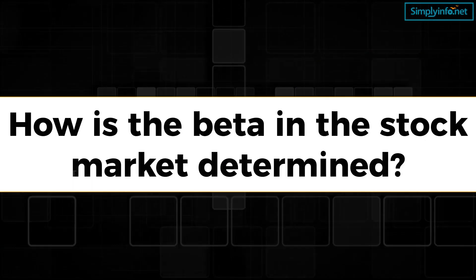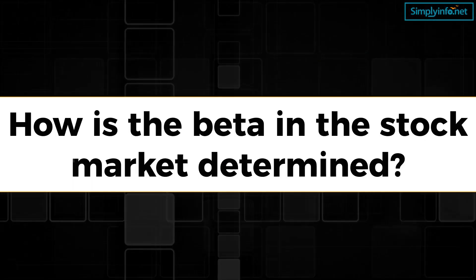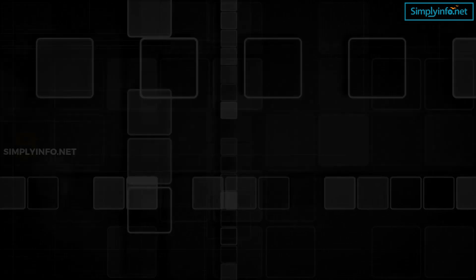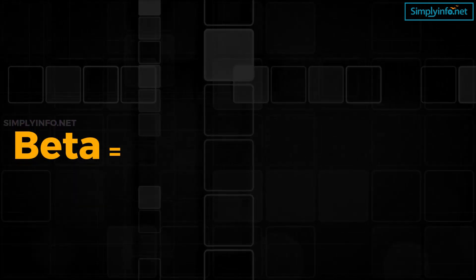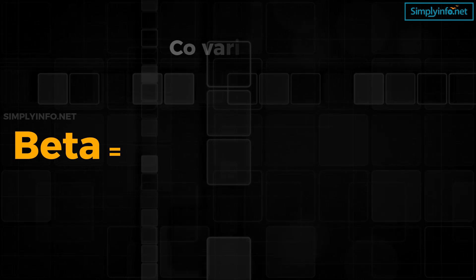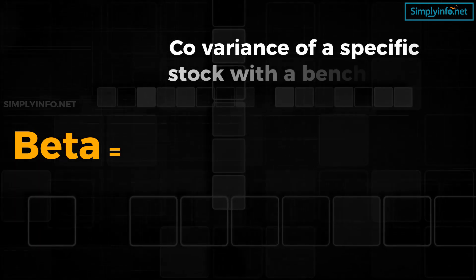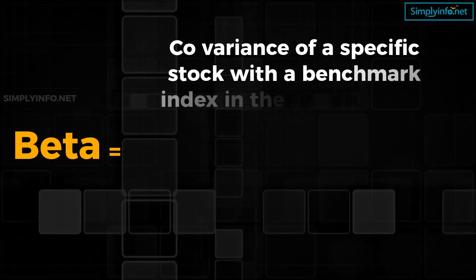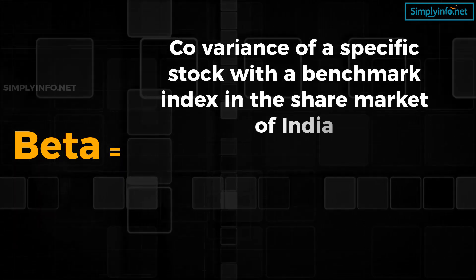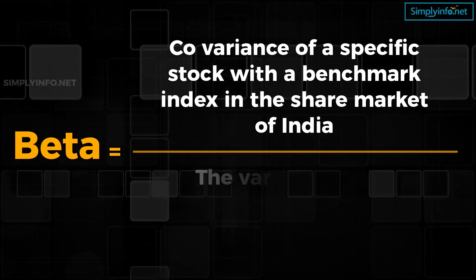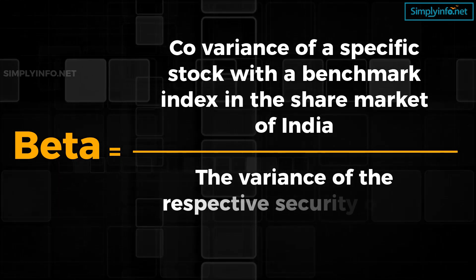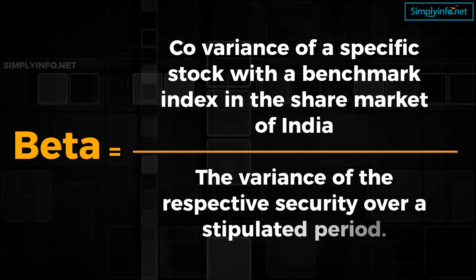How is the beta in the stock market determined? The formula of beta is calculated as follows: beta is equal to the covariance of a specific stock with a benchmark index divided by the variance of the respective security over a stipulated period.